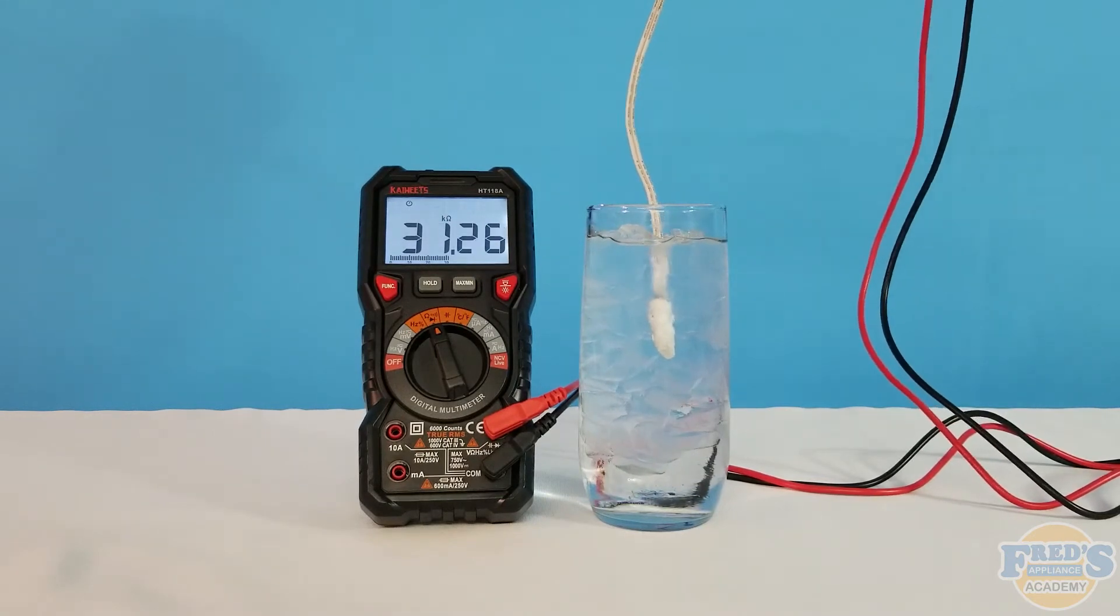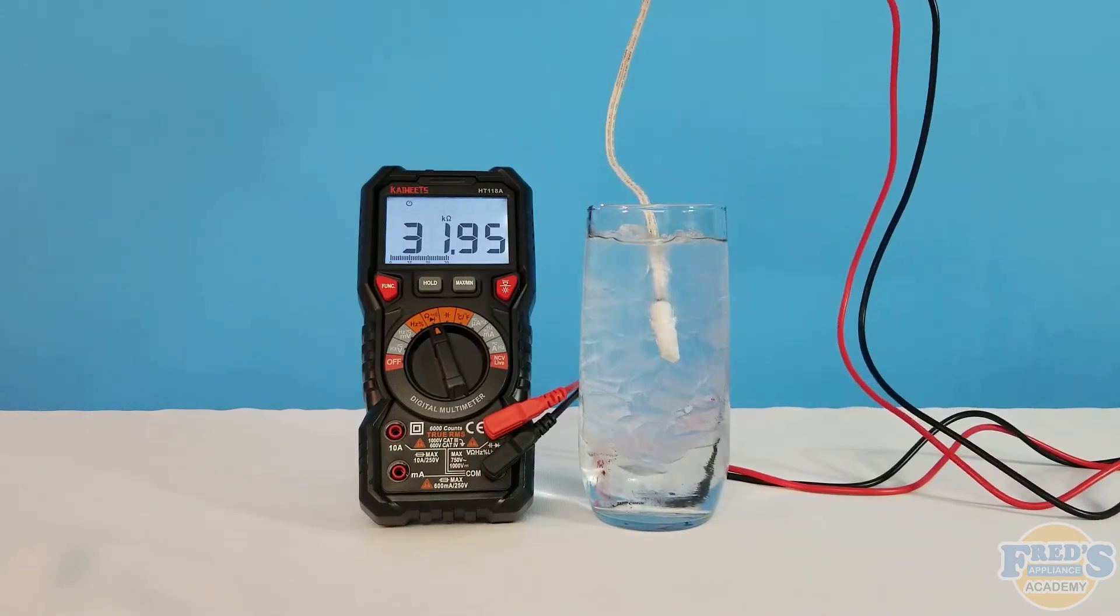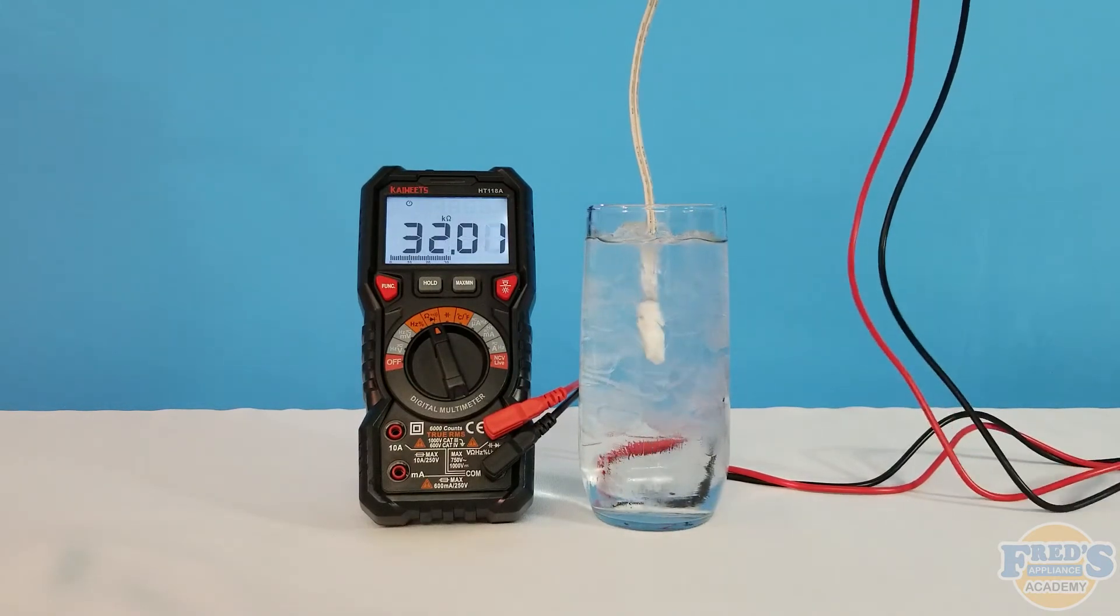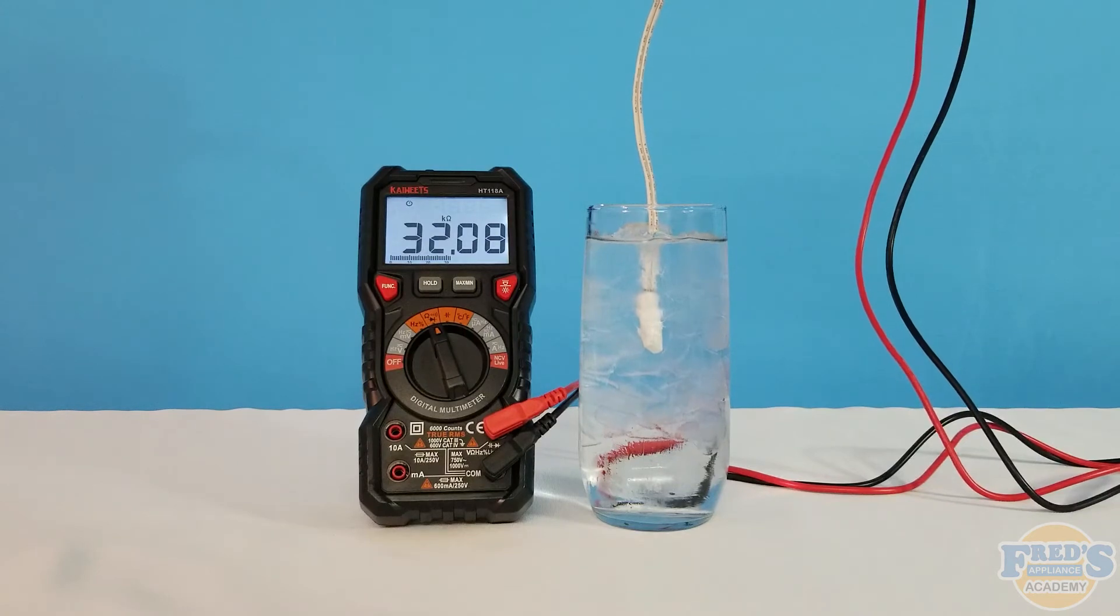Here we can see that resistance value climbing towards 32,000 ohms. As the resistance value reaches 32,000 ohms its reading starts to slow as the thermistor reaches 32 degrees.